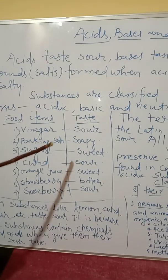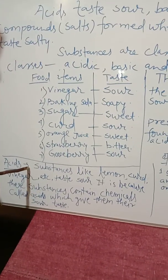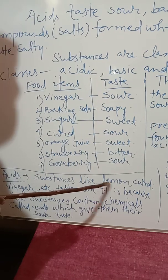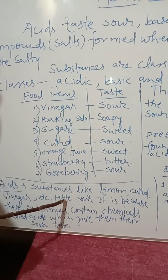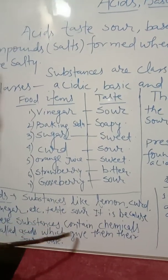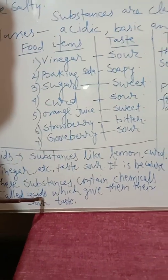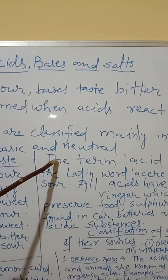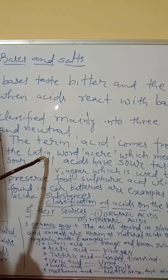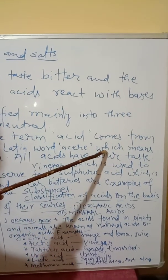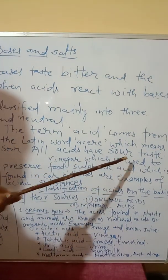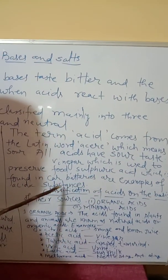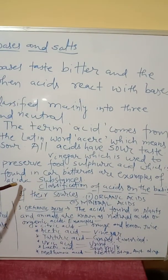Now we can learn about acids. To whom do we call acids? Substances like lemon, curd, vinegar, etc., that taste sour — it is because these substances contain chemicals called acids, which give them their sour taste. The term acid comes from the Latin word 'acidus', which means sour. All acids have sour taste. Vinegar, which is used to preserve food items, and sulfuric acid, which is found in car batteries, are examples of acidic substances.